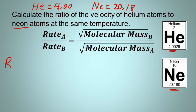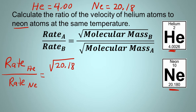So when I write the equation here, it's the rate of helium over the rate of neon equals the square root of the molecular mass of neon. So that's 20.18 over the square root of the molecular mass of helium, which is about 4.00. So now we just take our calculators and divide the square root of 20.18 by the square root of 4.00. And the answer I'm getting is about 2.25 times.